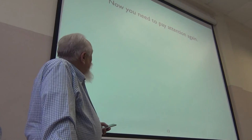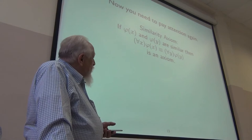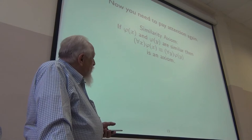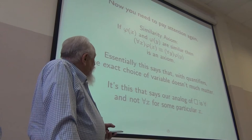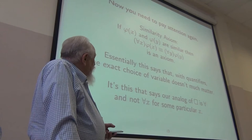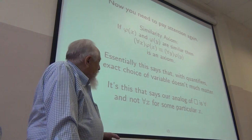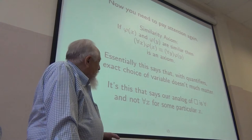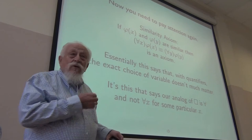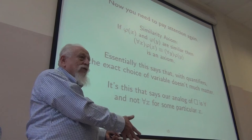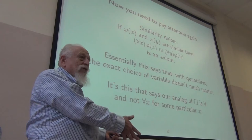So the thing we'll be assuming in all of our logics is: if phi of x and phi of y are similar, for-all x phi(x) is equivalent to for-all y phi(y). Our analog of box is going to be universal quantification and not universal quantification with a particular variable. One could make some sense out of an analogy with a particular variable, but you'd really want a multi-modal or multi-agent logic — one for each variable. I'm not doing that.